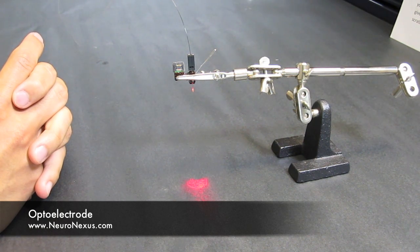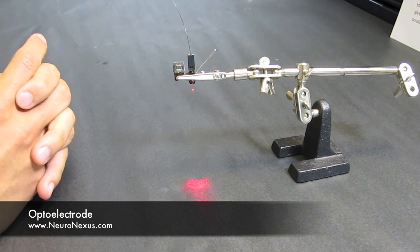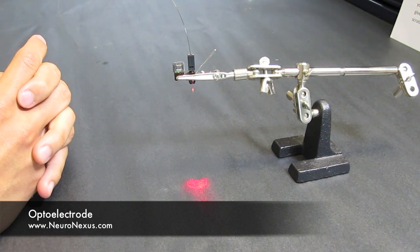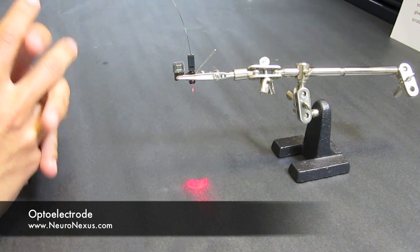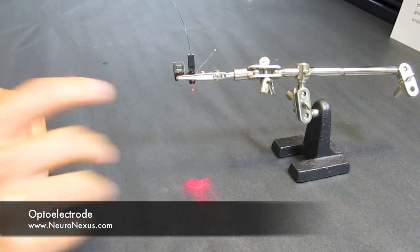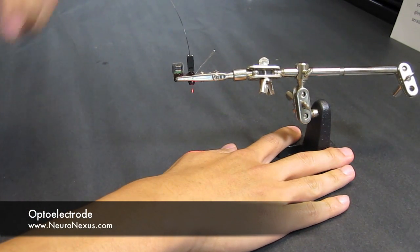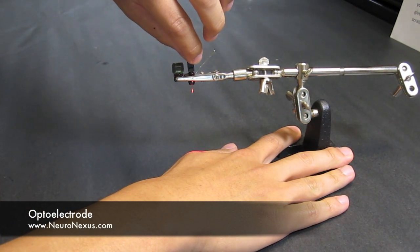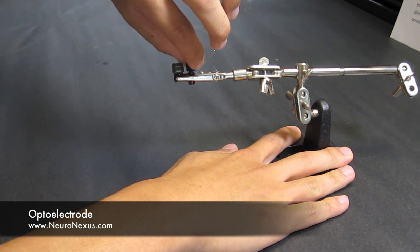Scientists working with awake behaving animals should appreciate our disconnection scheme. What we strongly recommend is this: Hold the animal still with one hand and with the other, rotate the female housing 180 degrees and pull.